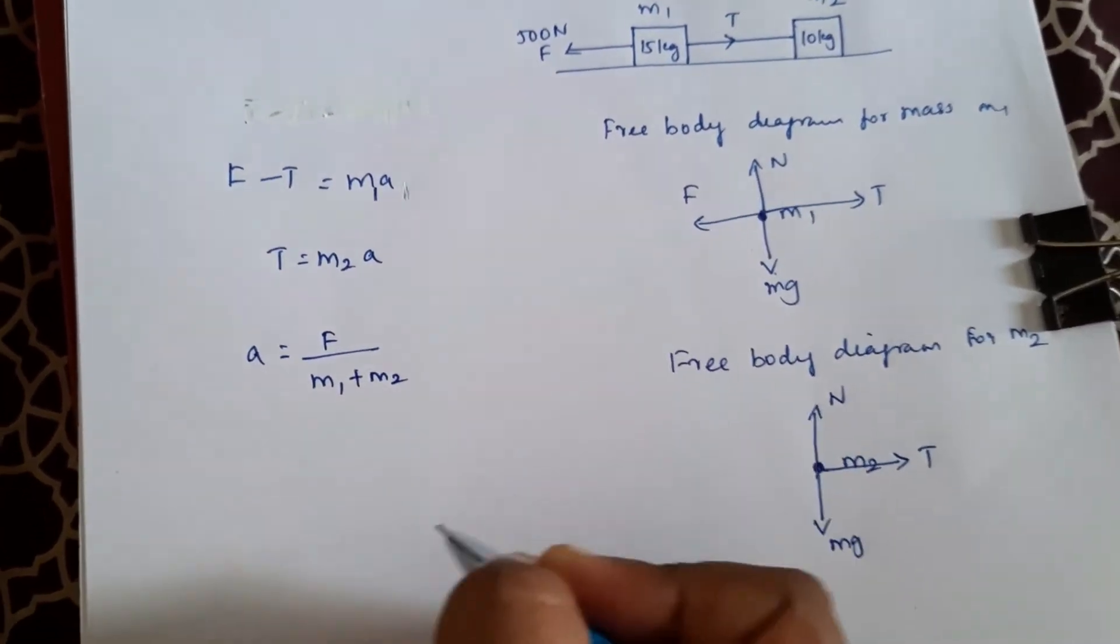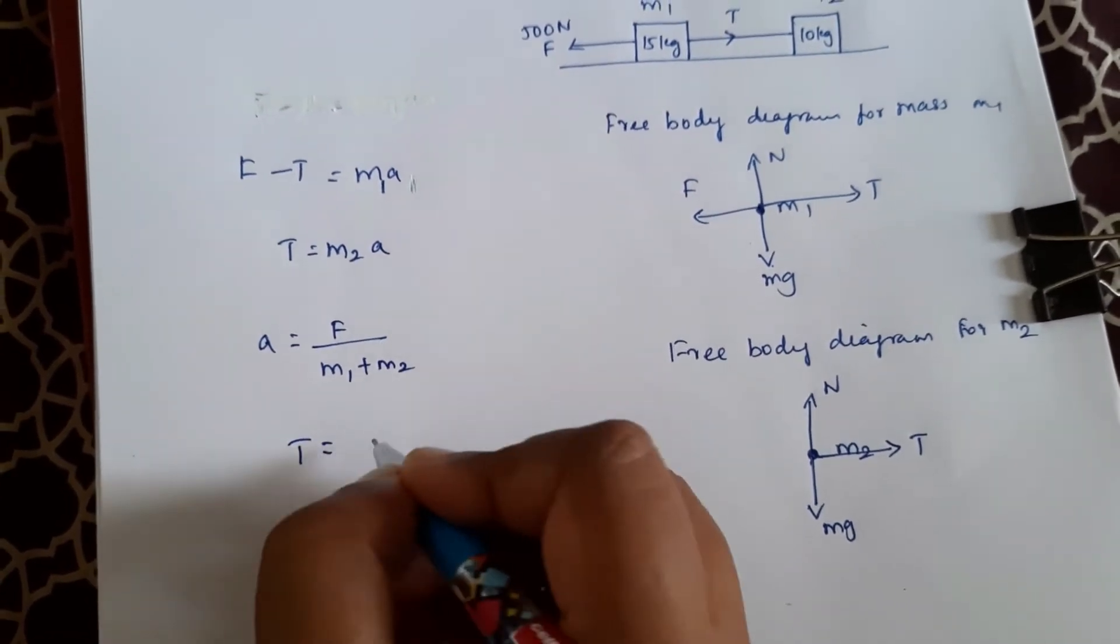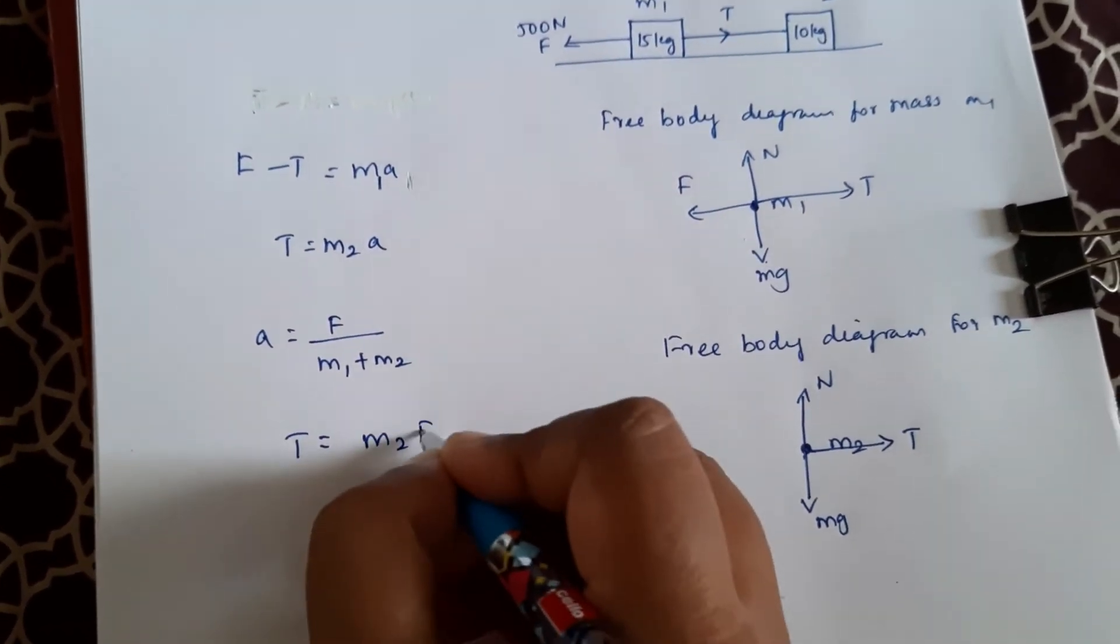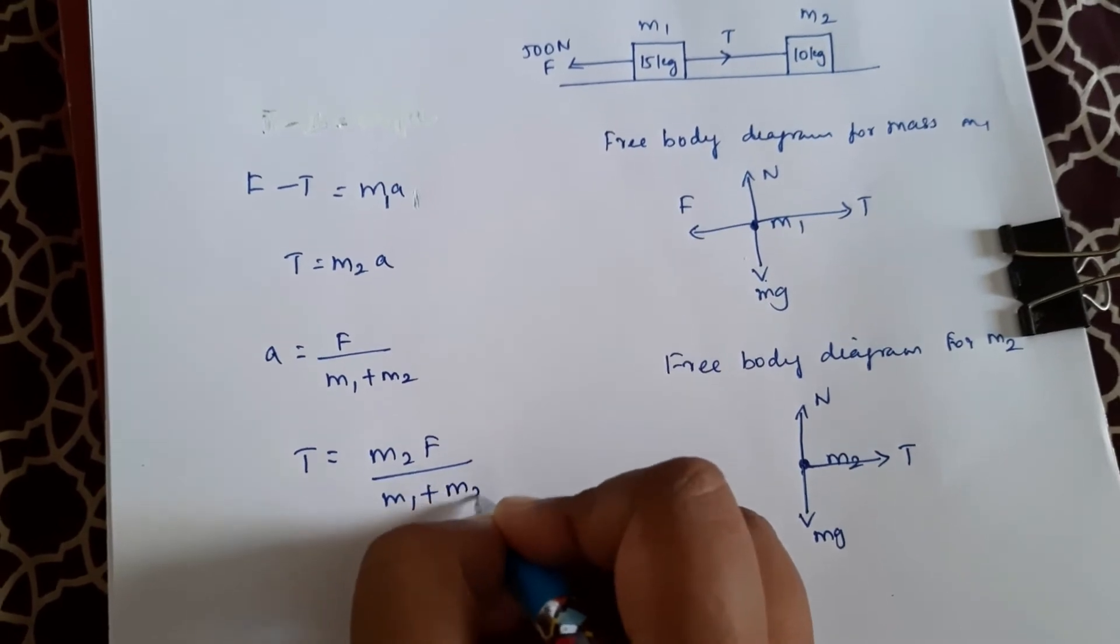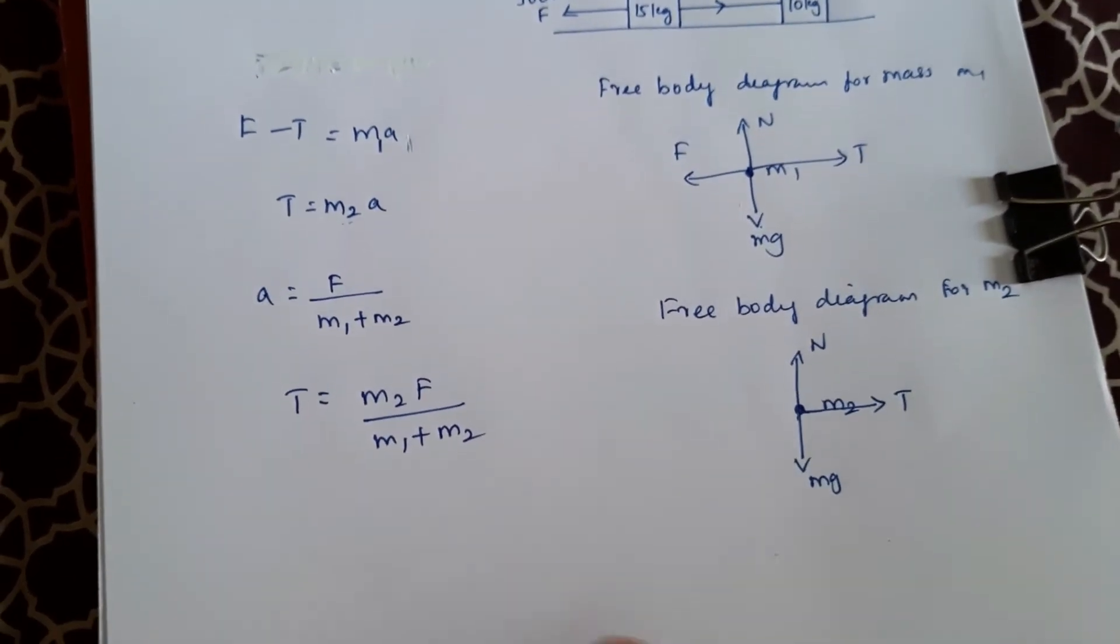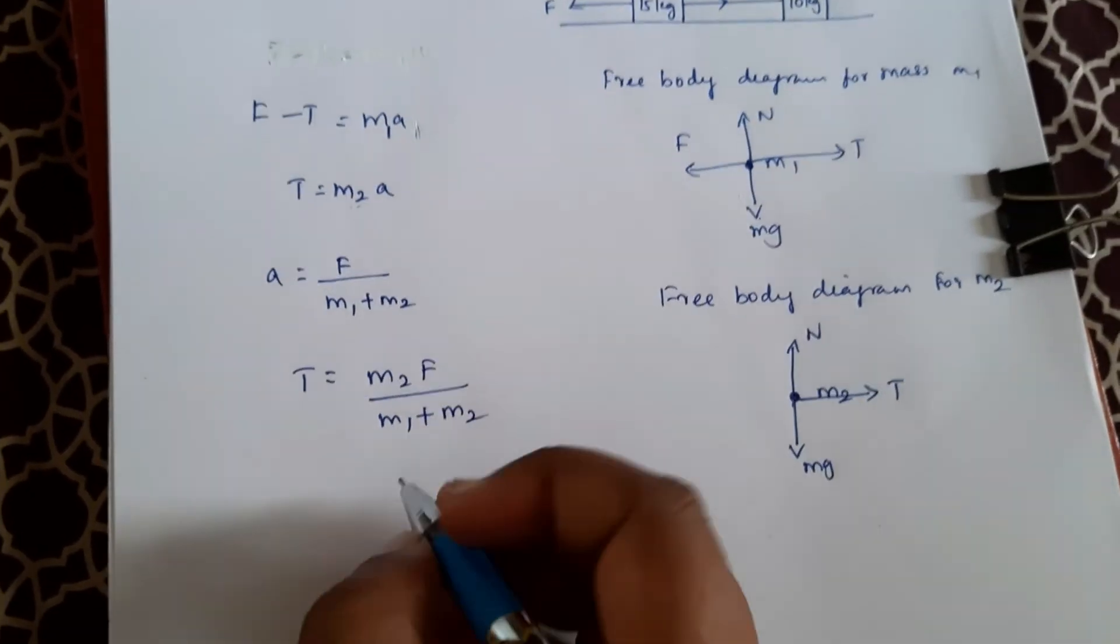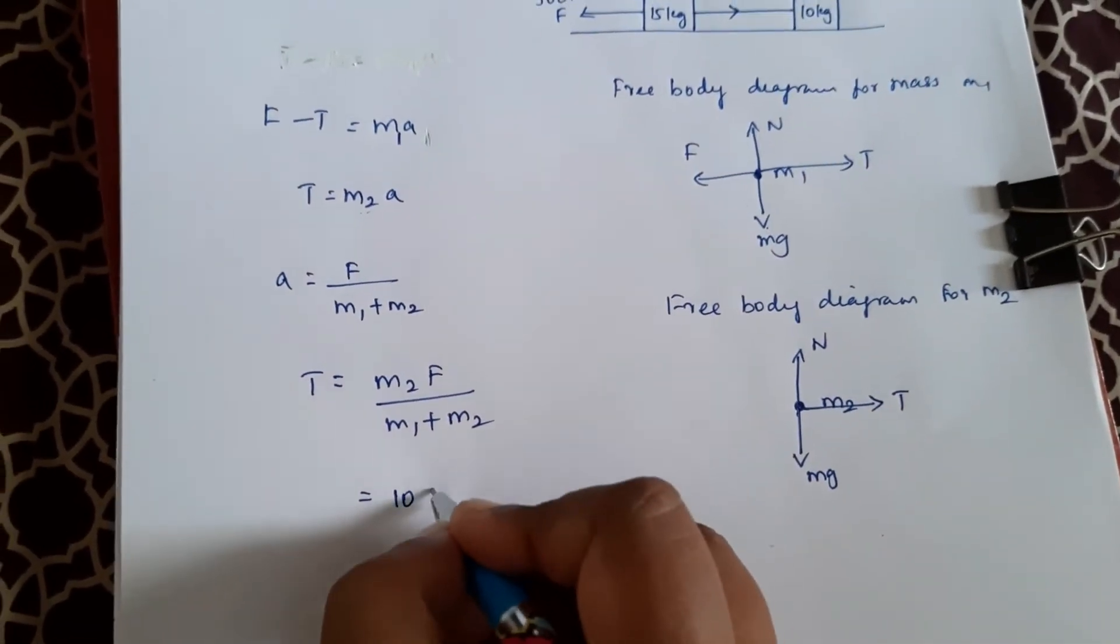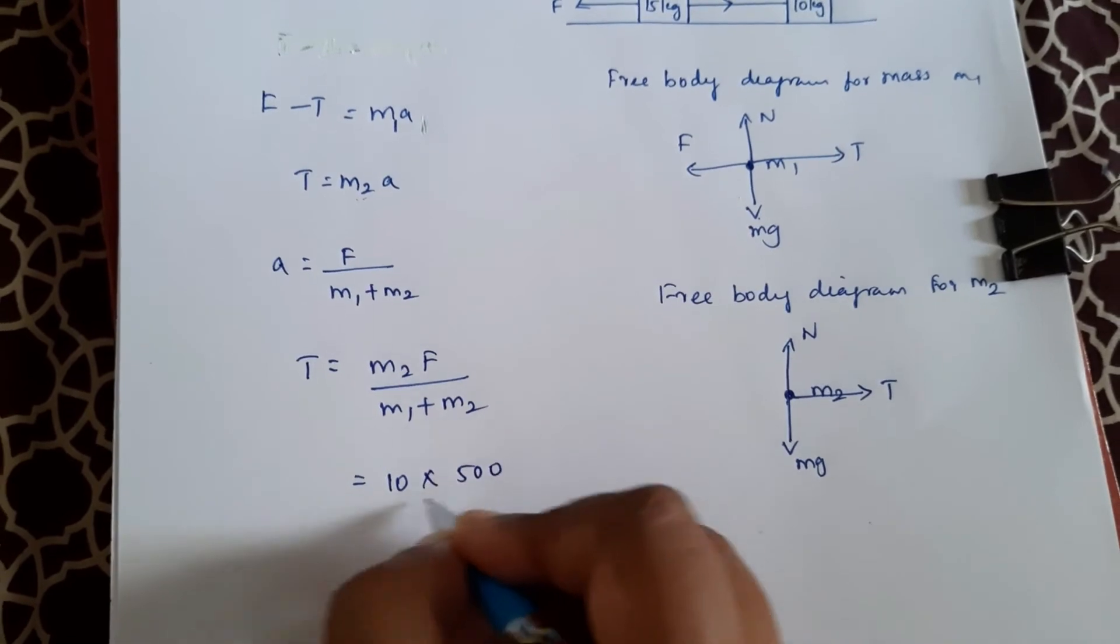So here, tension equals m2 times F divided by m1 plus m2. We are substituting for a. So I can substitute here now: m2 is 10 kg, 10 times 500 divided by m1 plus m2, which is 15 plus 10.